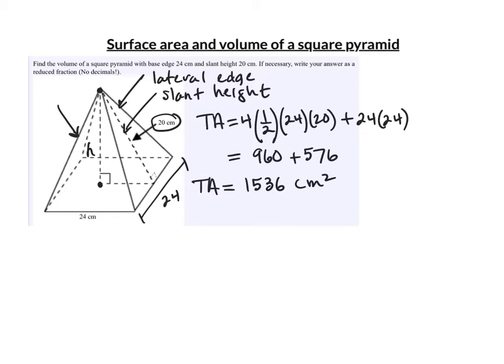Now we need a new formula for volume. The volume of a pyramid is one-third of a prism with the same base and height. So in general, the volume equals one-third times the area of the base times the height.